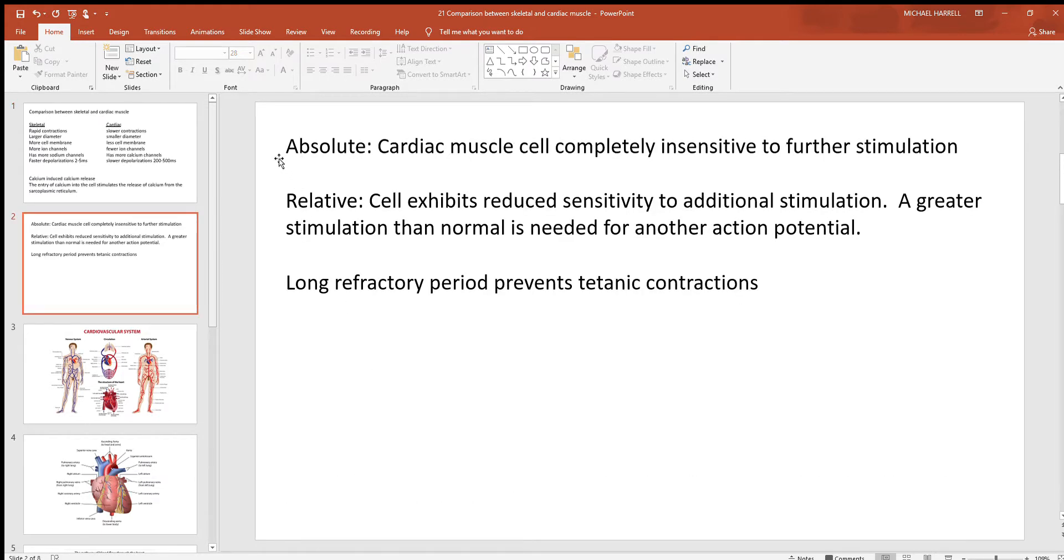But something else you hear about with cardiac muscle cells are these refractory periods. Notice how there are two of them, an absolute and a relative. The absolute refractory period is that time in which cardiac muscle cells are insensitive to further stimulation. Too many ion channels are open. The cell is depolarized at this state.